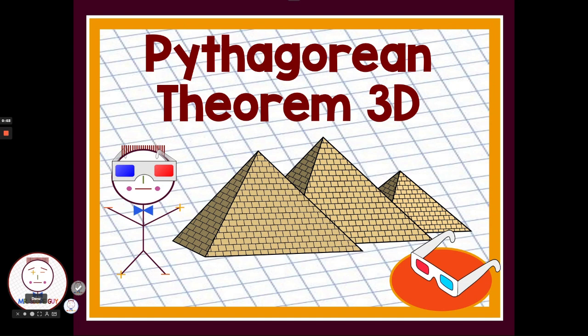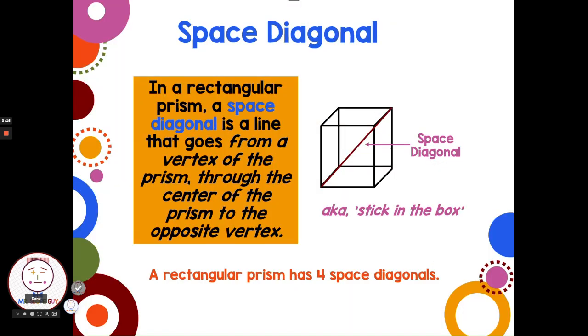Pythagorean theorem 3D. We can use the Pythagorean theorem inside of three-dimensional objects or solids where we have right triangles. For example, a commonly used application for the Pythagorean theorem would be in what's called the space diagonal.